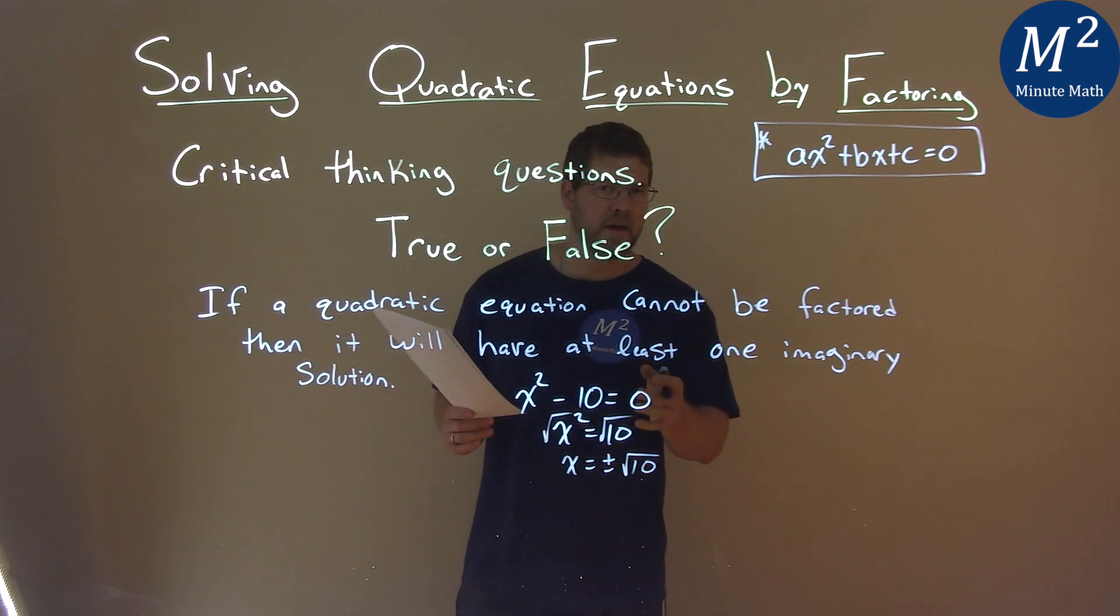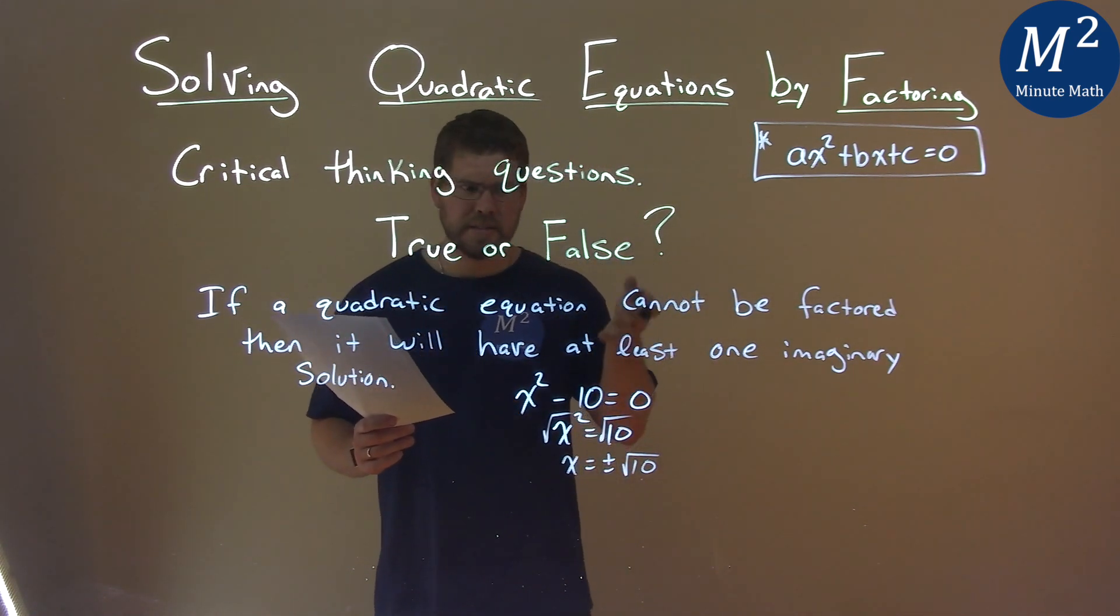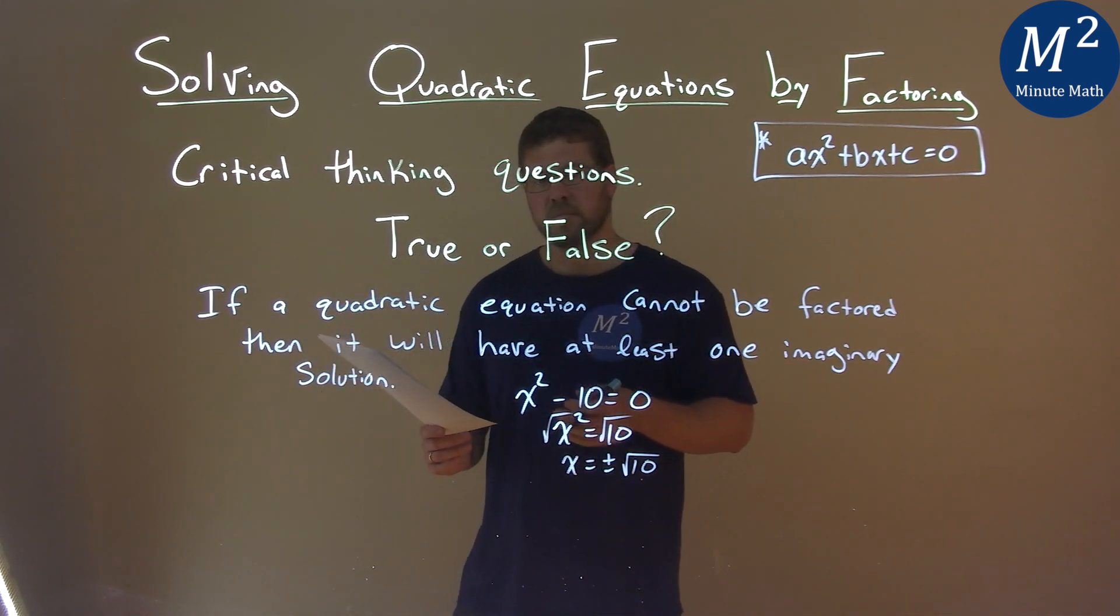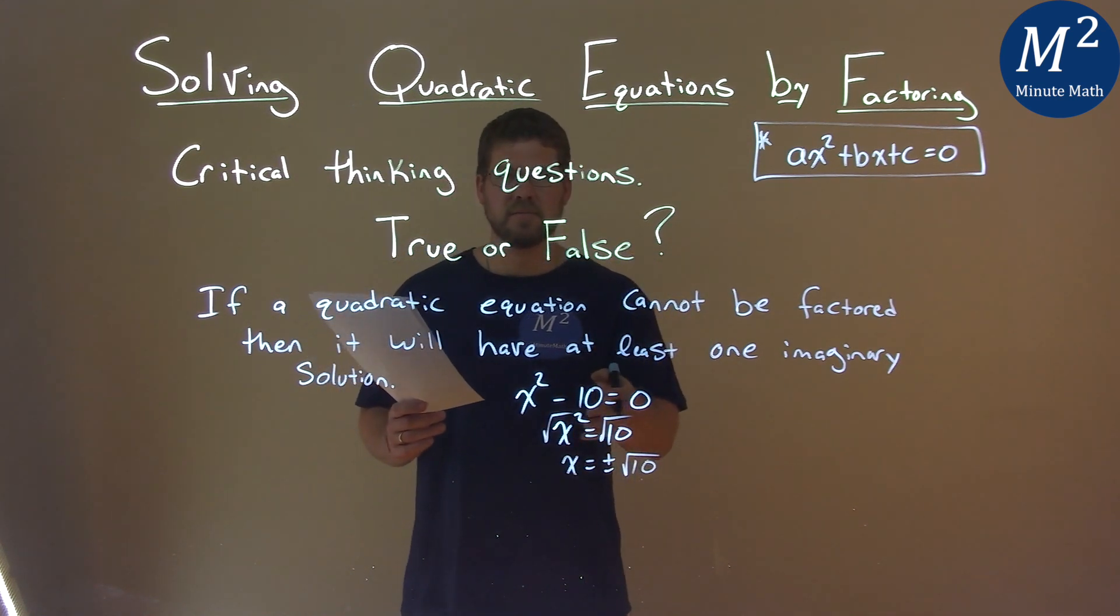Now, the square root of 10 is not imaginary. It's still a real number. And so we have x equals plus or minus a real number. It just goes on forever. It's irrational.